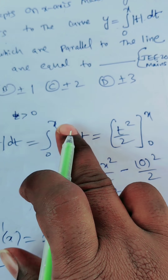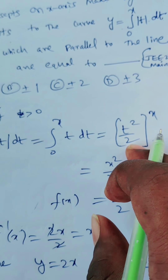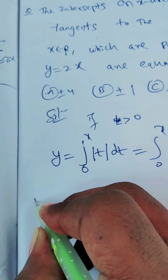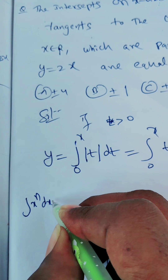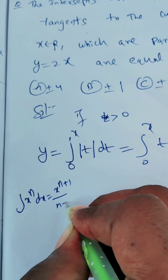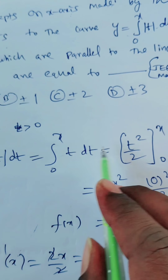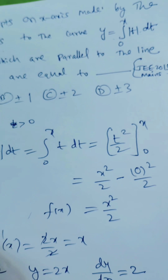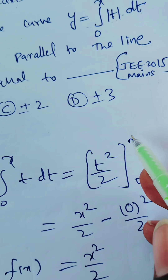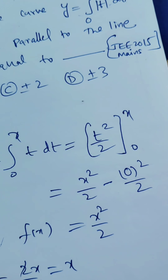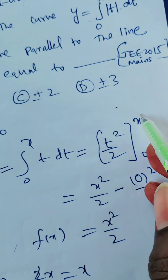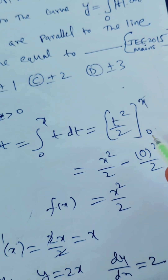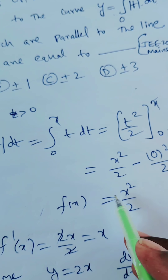Using the formula: integration of x^n dx equals x^(n+1) divided by (n+1), the integration of t is t² by 2. The limits are 0 to x, so substituting the upper limit x we get x²/2, and the lower limit gives 0²/2 which is 0. So for x greater than 0, the function f(x) equals x²/2.